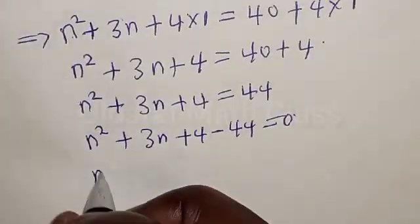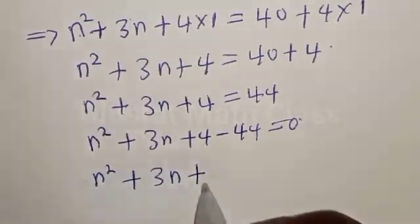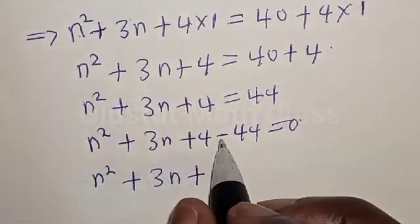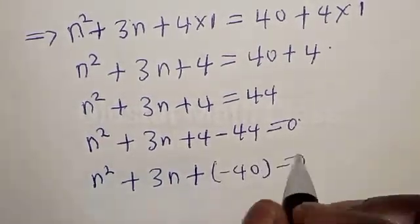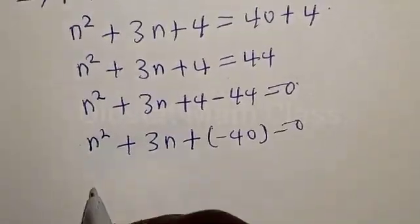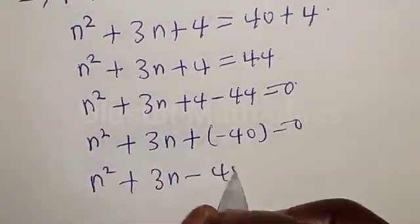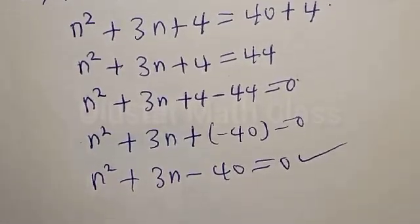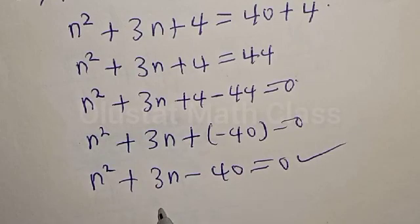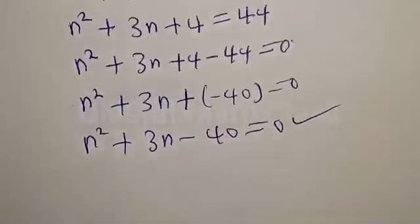Therefore, we have n squared plus 3n plus 4 minus 44, that is minus 40, is equal to 0. Therefore, we have n squared plus 3n minus 40 equals 0. This is a quadratic equation, and it can be solved by either factorization method or the quadratic general formula. But in this case, let's use the factorization method.